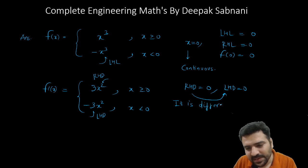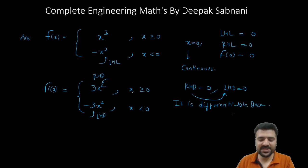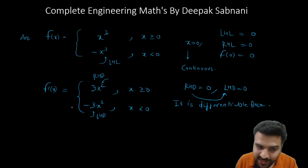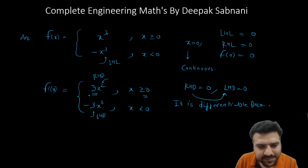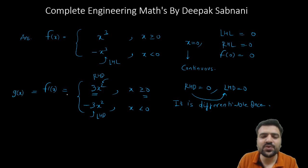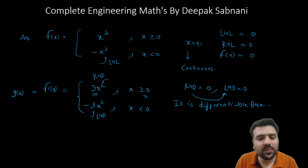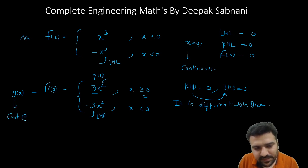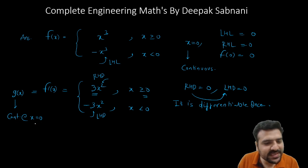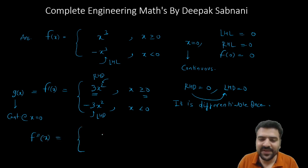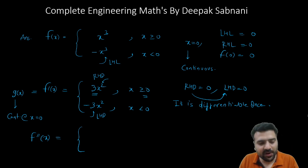Now we check if it is twice differentiable. Let g(x) = f'(x). We check continuity of g(x) at x = 0: right-hand limit is 3(0)² = 0, left-hand limit is -3(0)² = 0, so g(x) is continuous at x = 0. Since it is continuous, we can differentiate again. Differentiating: f''(x) = 6x when x > 0 and f''(x) = -6x when x < 0. We then check whether f'' is differentiable at x = 0.